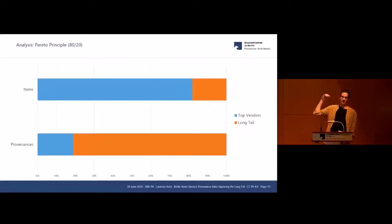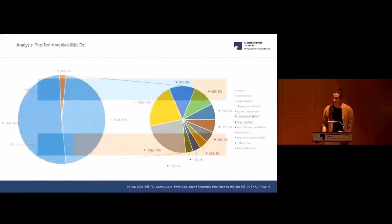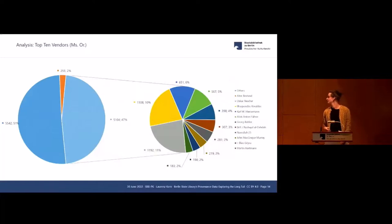To break it further down, Pareto principle for those of you who are familiar with that, 80-20 rule: 80 percent of the items acquired from only 20 percent of the provenances and vice versa. Top 10 vendors to make it more concrete, 37 percent of the holdings acquired from the top 10 vendors represented in the data.